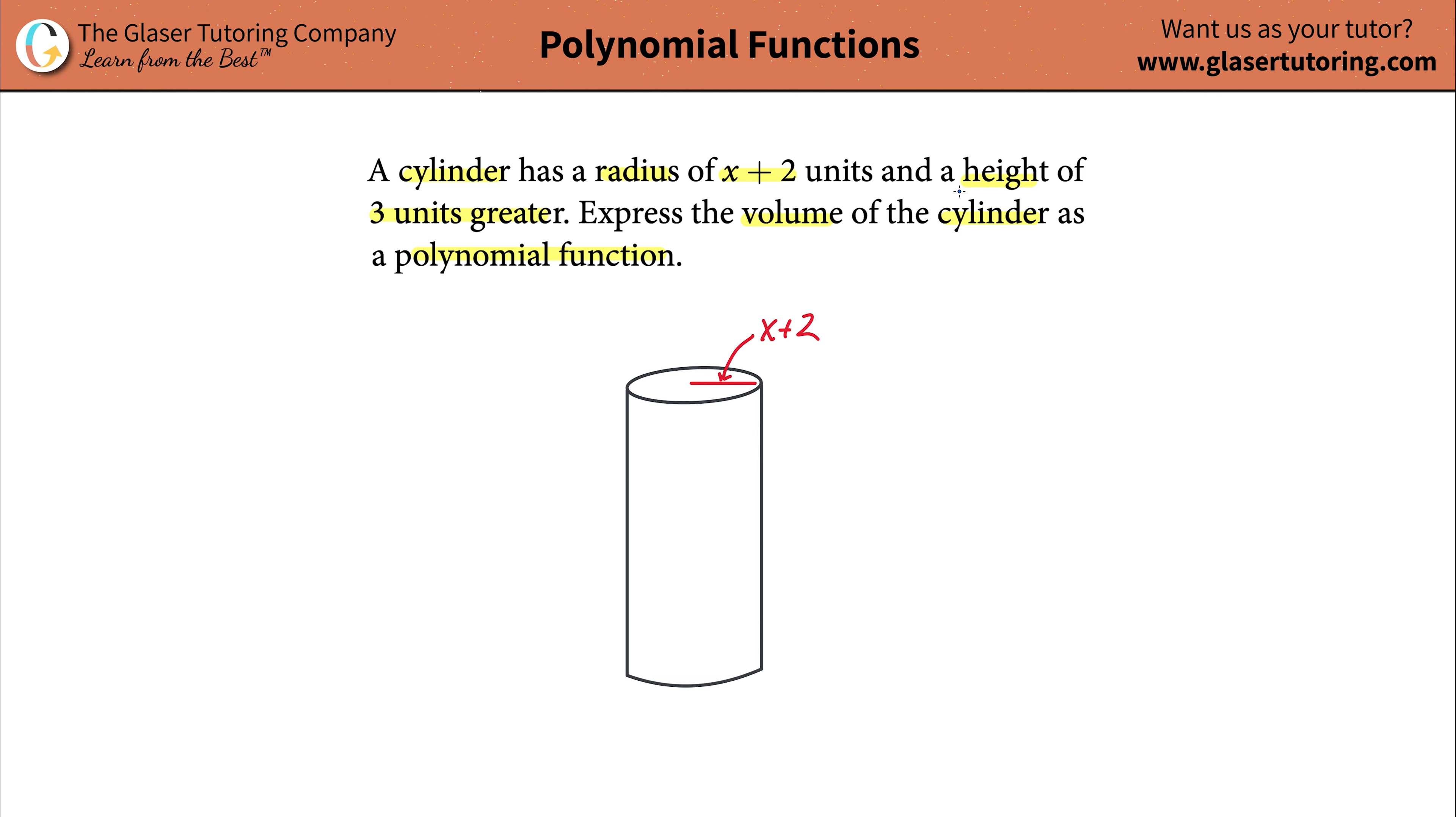And now it says it has a height of 3 units greater. I guess 3 units greater than the radius, yes? So what's the height of the cylinder? Well, the height would be from here all the way down to the bottom. And what's the height? Well, it's 3 units greater. It doesn't say 3 times greater. It says 3 units greater than the radius. So here's your radius. So it would be x plus 2. But then it's 3 units greater, so you're going to add 3. So in other words, this would simply be x plus 5. That's what it means to be 3 units greater than the radius.